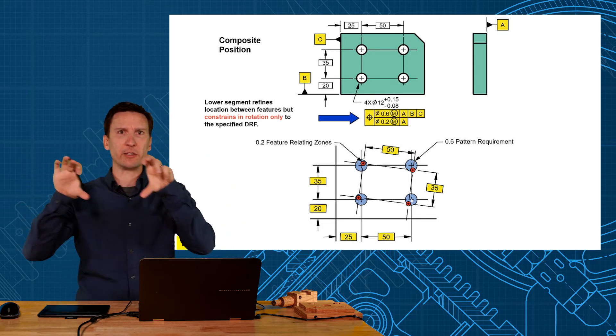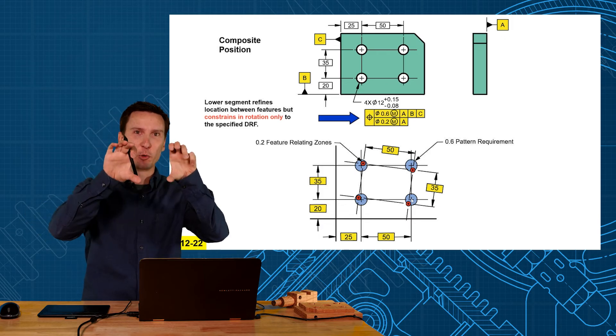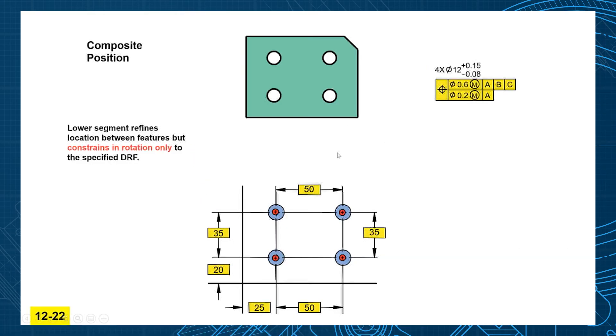So I don't care where you place these holes on the part, but make sure they're placed as a group within the 0.2. So if we think of the effect that that would have on our part, when you have both of these constraints on here, you're saying the holes can really shift around.